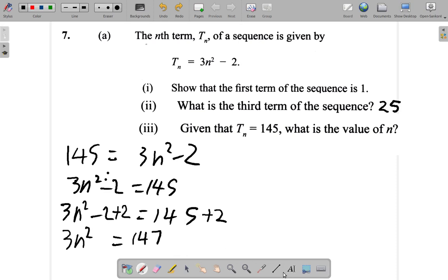All right, let me put a line here to separate the working. Now, here, 3n squared is equal to 147. 3n squared is equal to 147. I need to get rid of the n, I mean the 3. If I say divide here by 3 and divide here by 3. 3 into 3 is 1. So I have n squared equal.